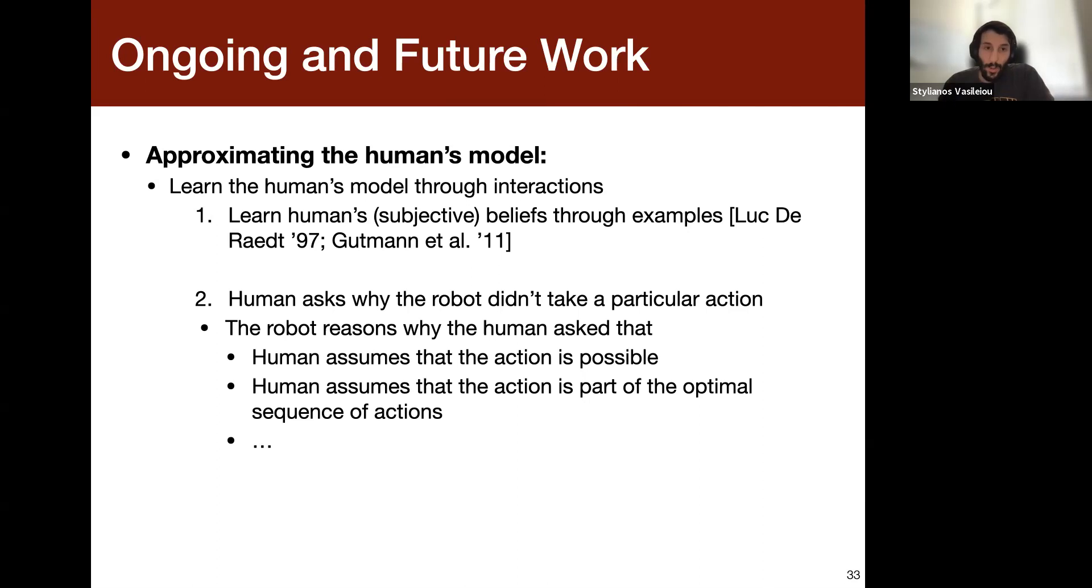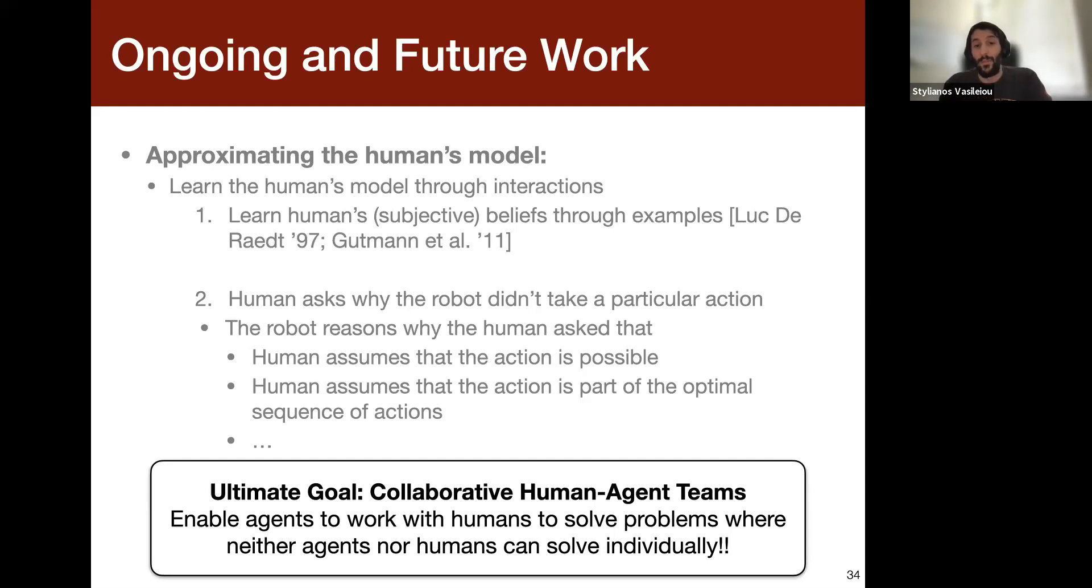Or another idea there is to also have a more iterative conversation between the agent and the human user. So basically the human user can ask a question to the agent, then the agent can respond back with an explanation, but then the user can also respond back on that explanation, basically say that they didn't understand a particular detail of the explanation, or they can even contest the explanation. And this process can go on until basically they're reconciled, they're both in agreement. So the ultimate goal of our work is to enable a more collaborative human-agent team, basically to enable agents to work with humans to solve problems where neither agents nor humans can solve individually. And I believe this is my very short presentation.